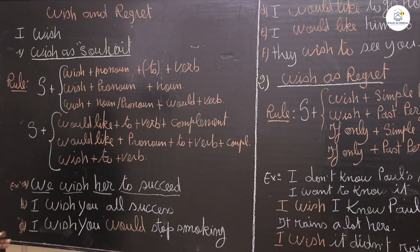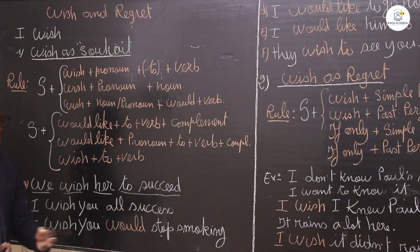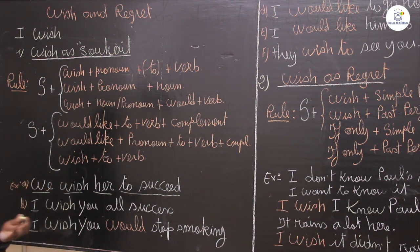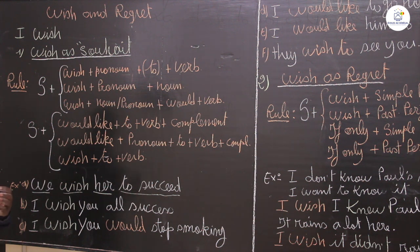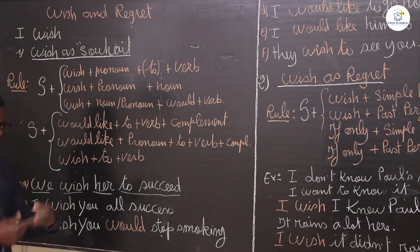We wish her to succeed. It means I like her to succeed — I like her to pass or to succeed in her life. For example, to pass her exam. So this is the first pattern of wish as a positive desire.